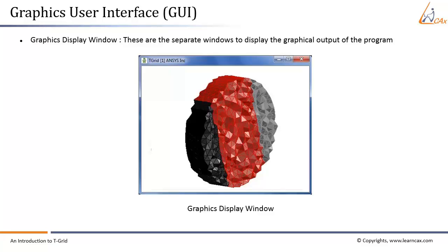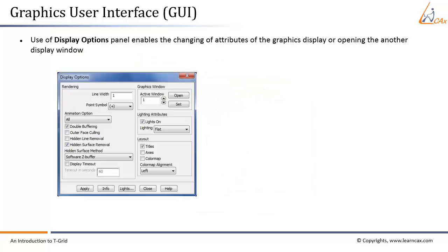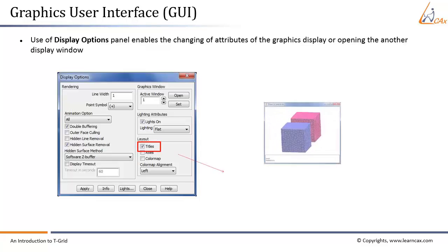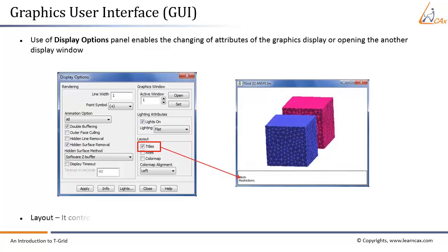Graphics display windows are separate windows that display the graphical output of the program. The display options panel enables changing of attributes of the graphics display or opening another display window. The layout under the display options panel controls the display of captions, axes, and the color map in the graphics display window.